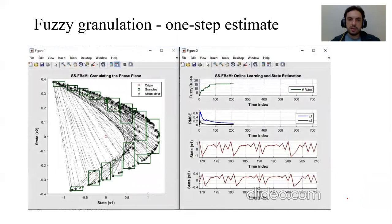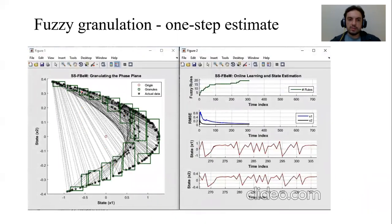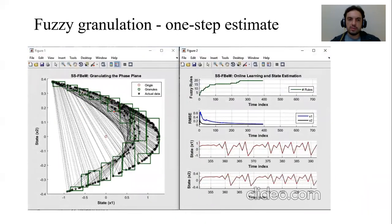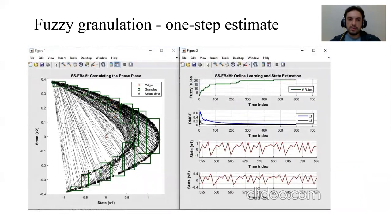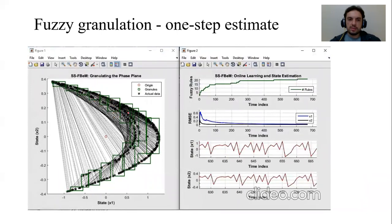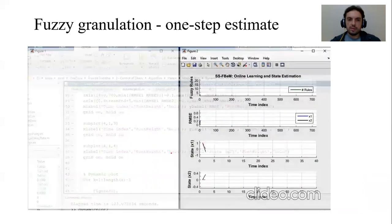Our algorithm running, we granulate the phase plane. These green hyperboxes are fuzzy. There are state-space models within the hyperboxes. They evolve. This is the evolution of the fuzzy rules. This is the convergence of the error over time and the estimation of the states.